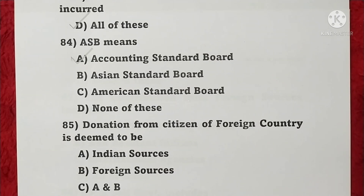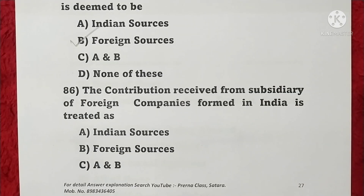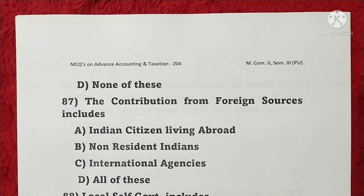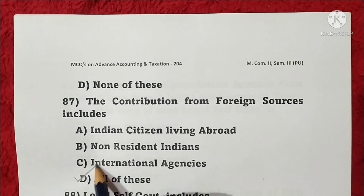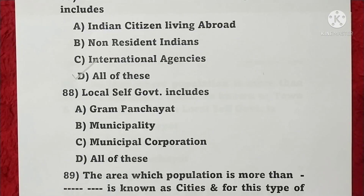Question 84: ASB means Accounting Standards Board — option A is correct. Question 85: Donation from a citizen of a foreign country is deemed to be from foreign sources — option B is correct. Question 86: The contribution received from a subsidiary of foreign companies formed in India is treated as foreign sources — option B is correct. Question 87: Contributions from foreign sources include Indian citizens living abroad, non-resident Indians, international agencies — all of these, so option D is correct.